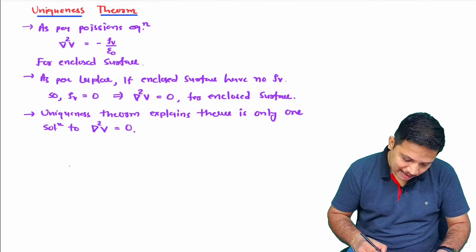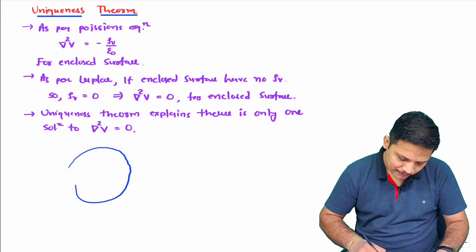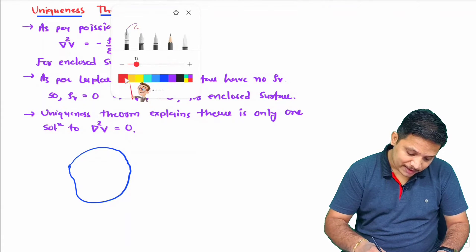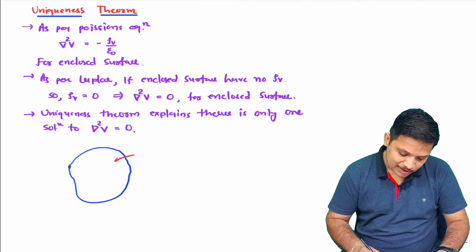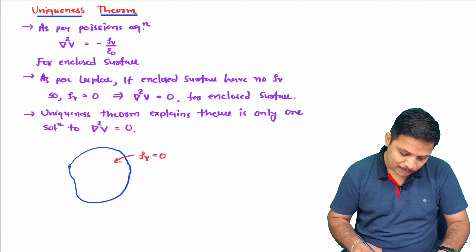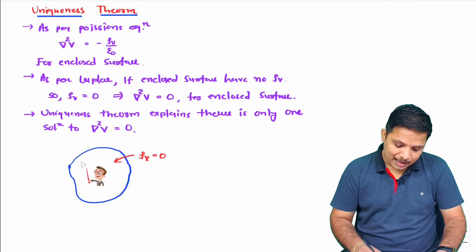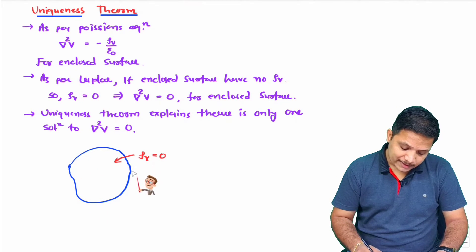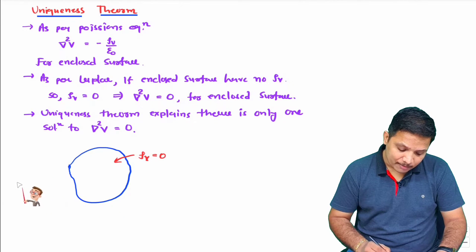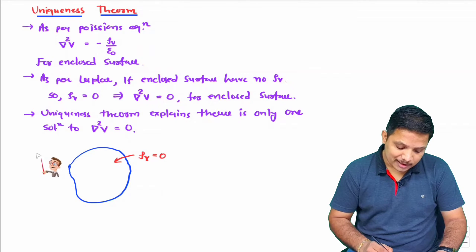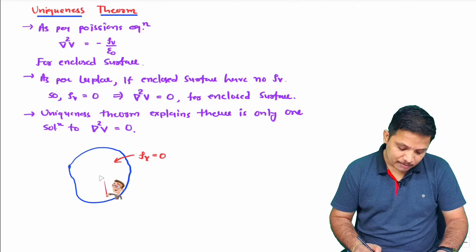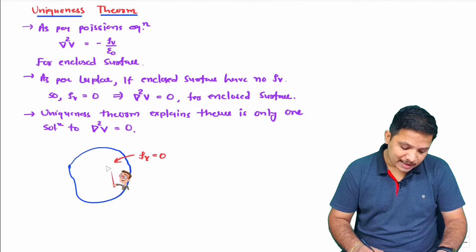Let me explain this graphically. If we have an enclosed surface and there is no volume charge inside — meaning volume charge inside is 0 — then there is no maxima and minima inside the surface. On the surface, maxima and minima are defined by external parameters. Externally there can be many charges that define the maximum and minimum potential on the surface, but inside there will be no maxima and minima if rho_v equals 0.